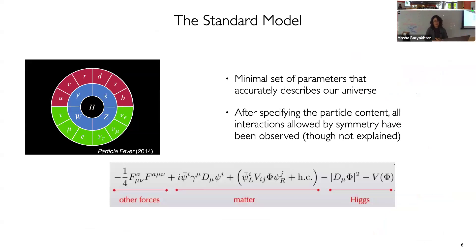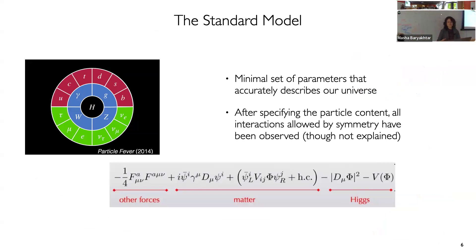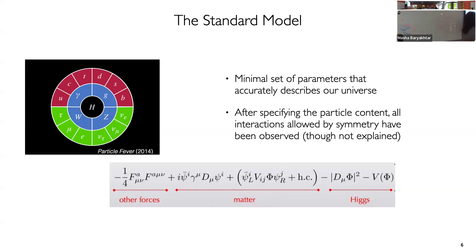In the standard model, it's a minimal set of parameters that accurately describes our universe. One special thing about it is that after we specify the particle content, there are some symmetries that are forced on us just by that particle content, and then it's fully specified. We have electromagnetism, the weak force, we have matter, we have the Higgs sector.